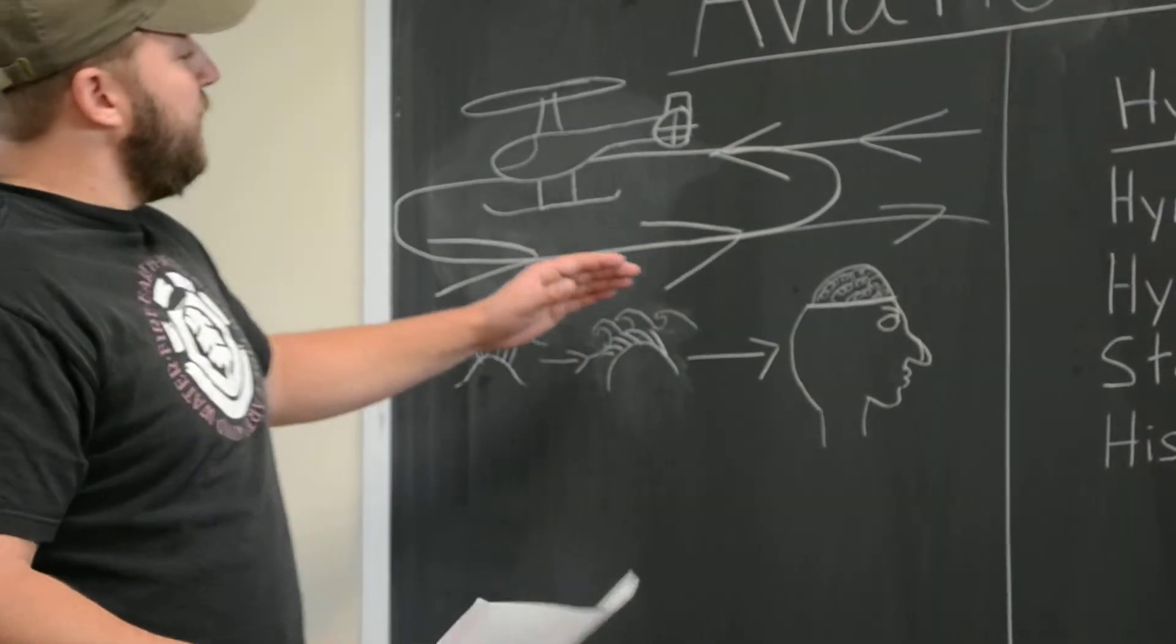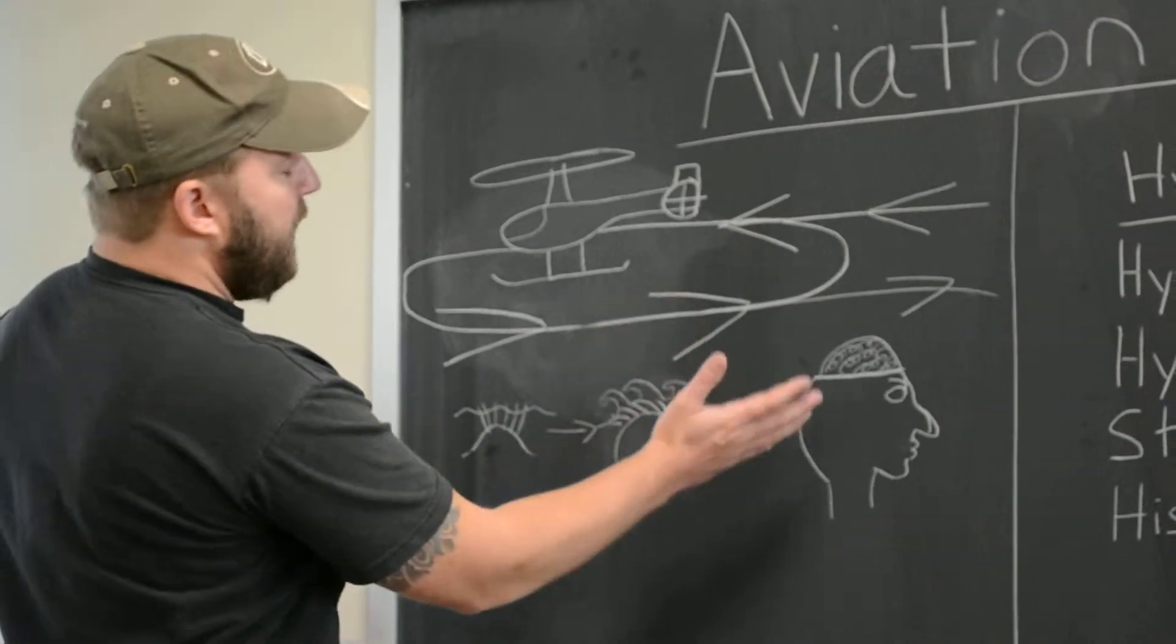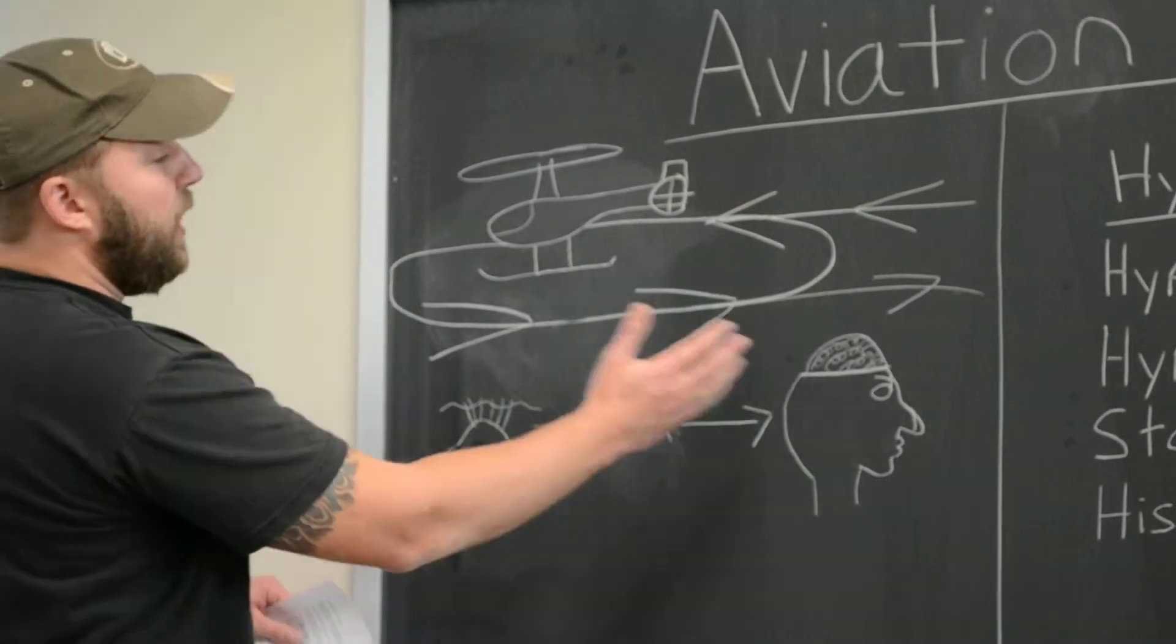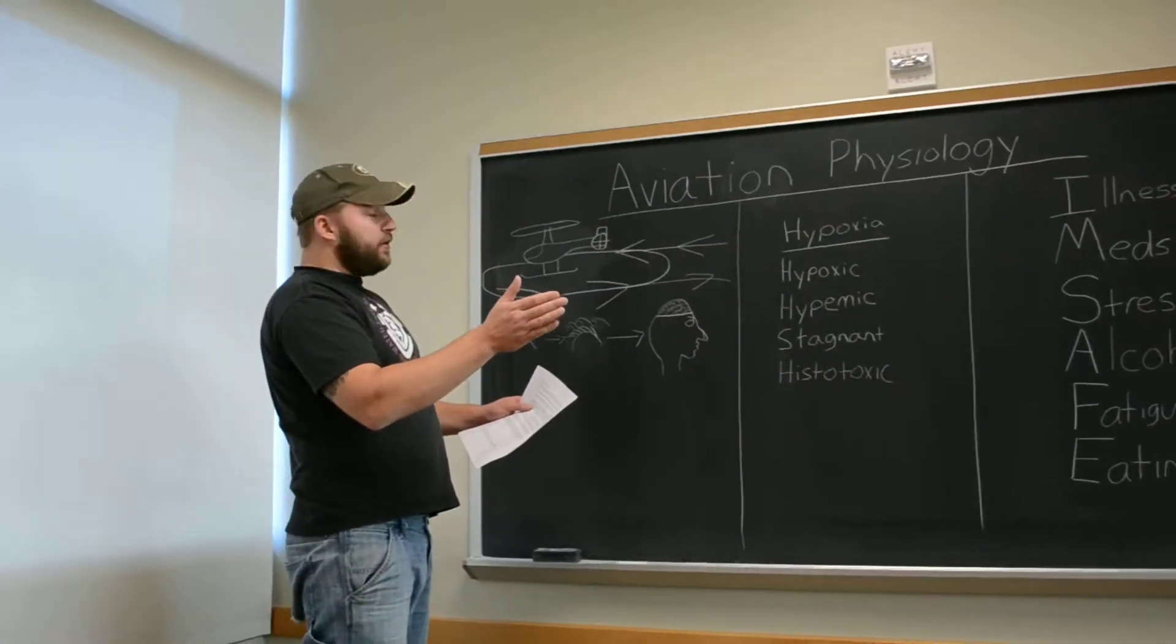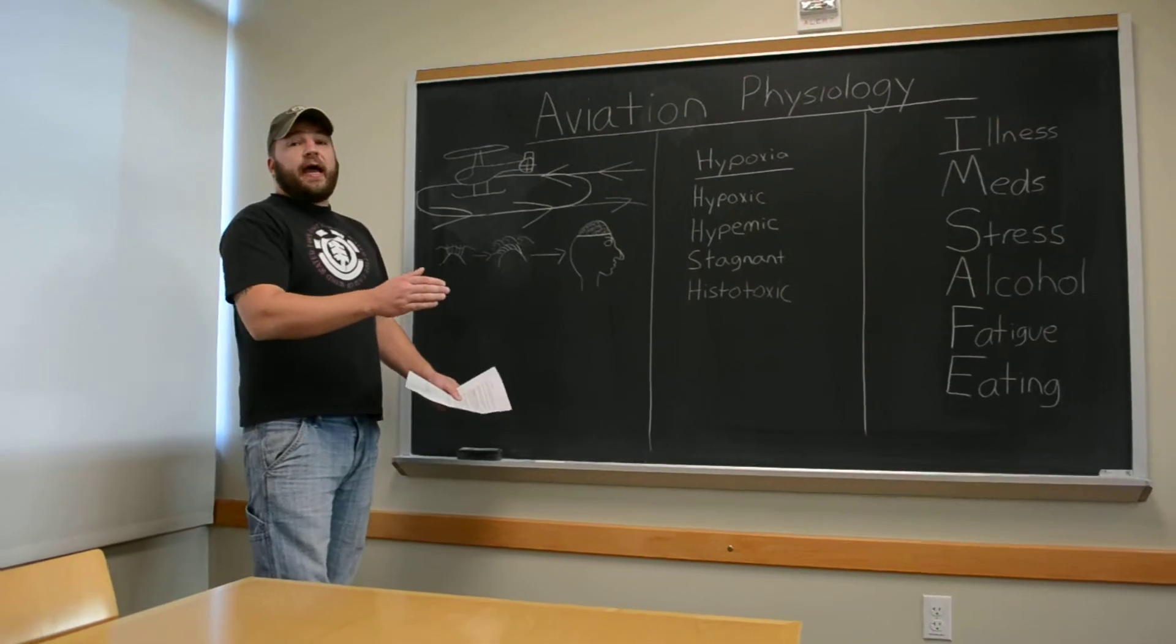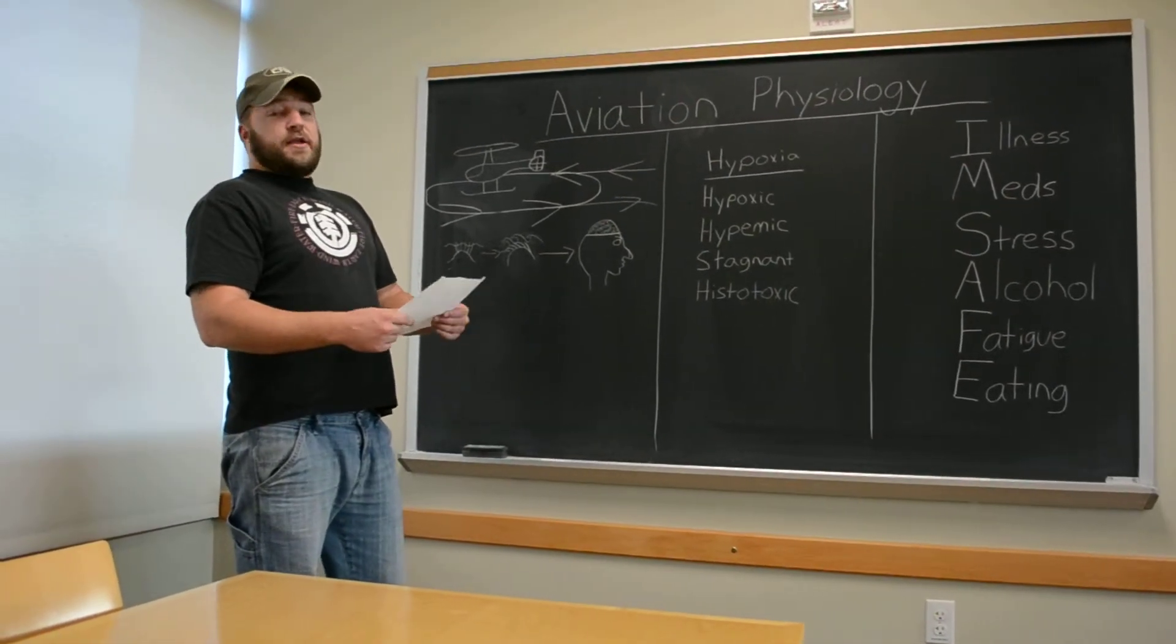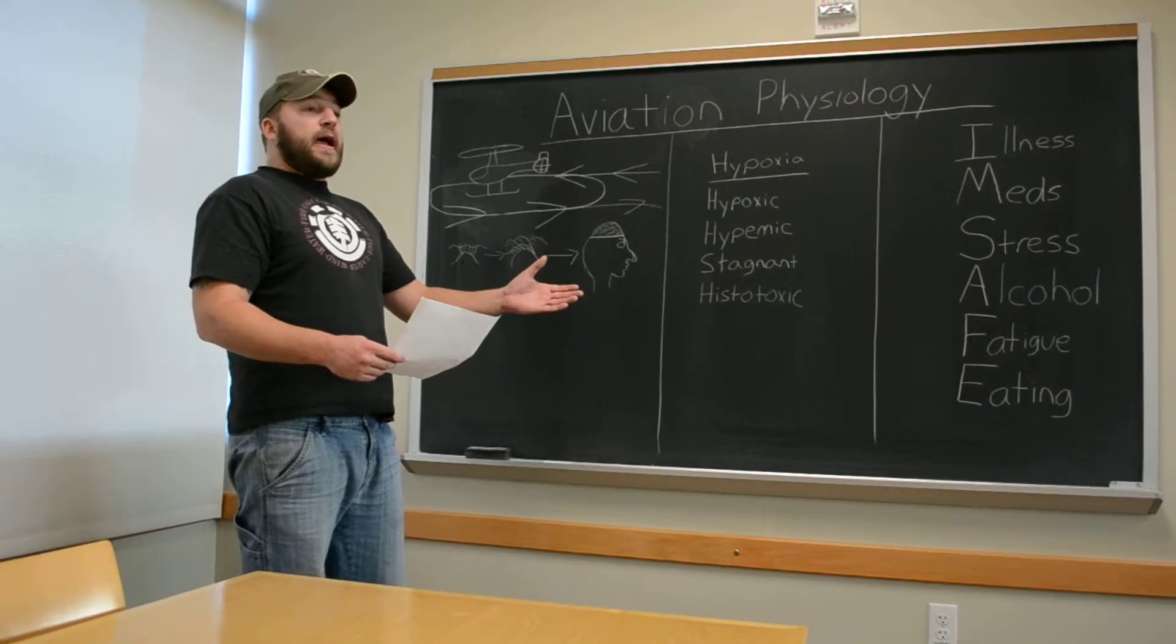The fluid will then flow the other way and the hairs will then go the opposite way. So even if you are flying straight and level, what's going to happen is your brain is going to interpret that as a turn in the opposite direction and then you're going to want to turn back to correct that.